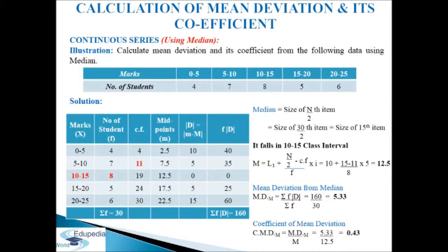Median = size of n/2 item = 30/2 = 15th item. The 15th item lies in cumulative frequency 19, so class interval is 10–15. Applying the formula M = L1 + [(n/2 − cf) / f] × i, where L1 is lower limit, cf is cumulative frequency, f is frequency, and i is class width, we get median = 12.5.